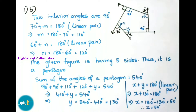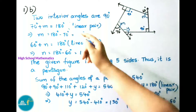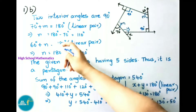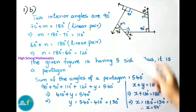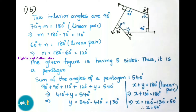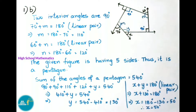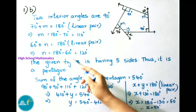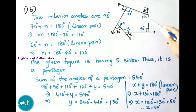The exterior angles 70 and 60 will form linear pairs. For 70 degrees plus M equals 180, M equals 180 minus 70, that is 110 degrees. For 60 degrees plus N equals 180, N equals 180 minus 60, that is 120 degrees.